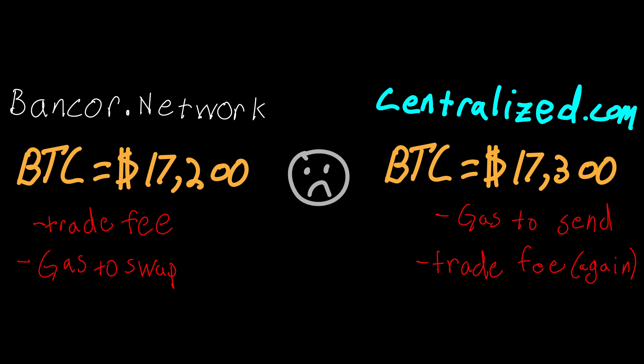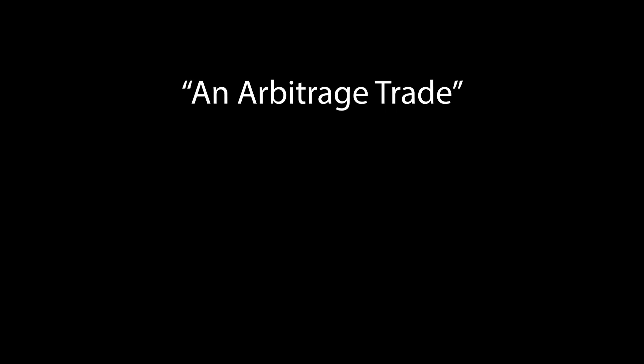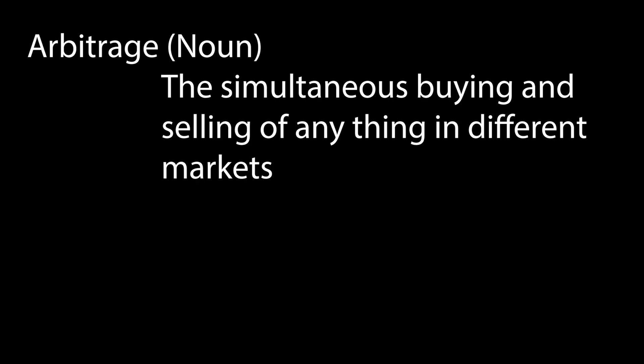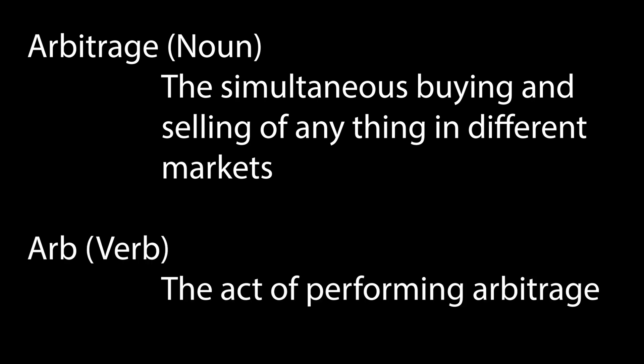This whole process is called an arbitrage trade. Arbitrage is when a user buys an asset in one market and immediately sells it in another market at a higher price, or attempts to. One of the defining characteristics of an ARB is that the user who is buying and selling the asset doesn't actually want to keep the asset.